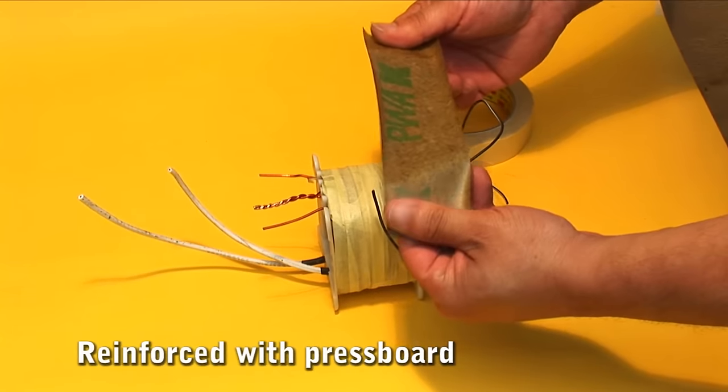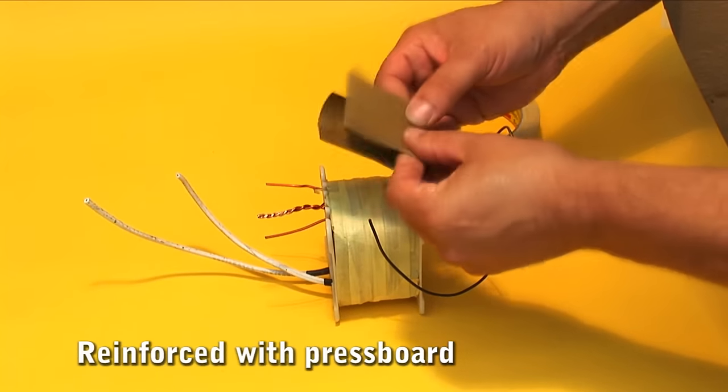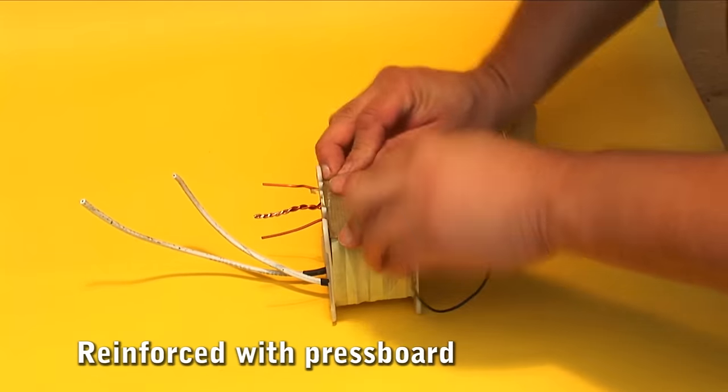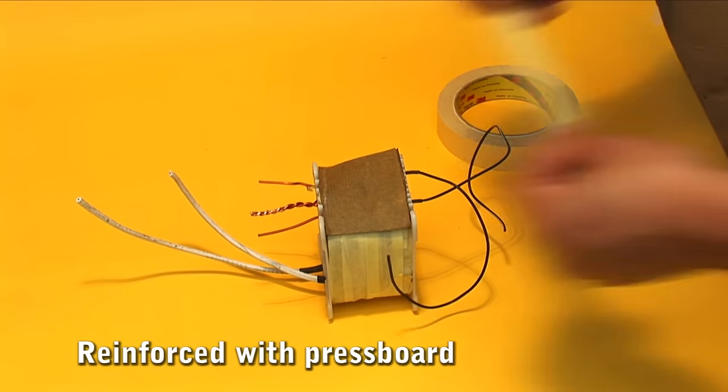Then with a piece of waxed paper or pressboard, we strengthen the part where the wires join the main secondary winding with the output wires.